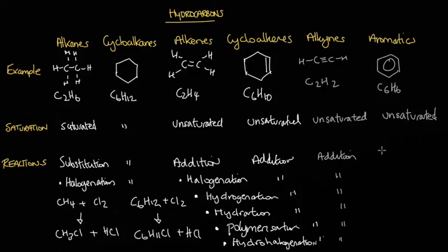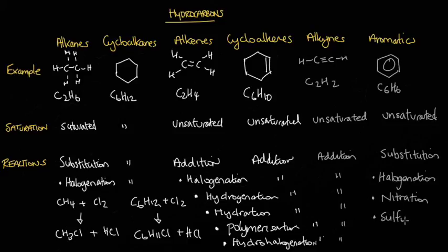However, unlike the other unsaturated families, it undergoes substitution reactions. So really, benzene behaves more like an alkane or a cycloalkane than an alkene or an alkyne. The classic substitution reactions that aromatics undergo include halogenation, nitration, and sulfonation.